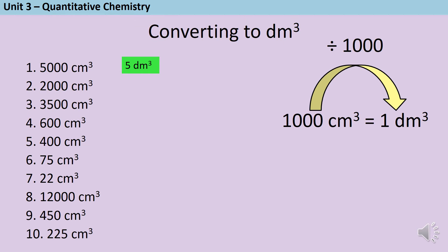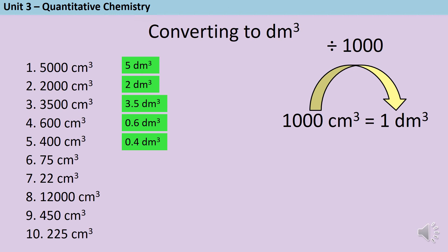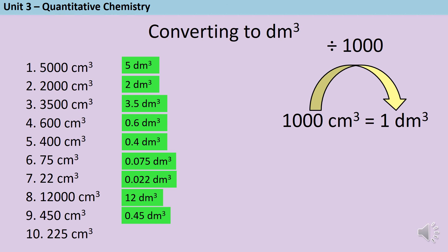So: 2000 cm³ is 2 dm³; 3500 cm³ is 3.5 dm³; 600 cm³ is 0.6 dm³; 400 cm³ is 0.4 dm³; 75 cm³ is 0.075 dm³; 22 cm³ is 0.022 dm³; 12,000 cm³ is 12 dm³; 450 cm³ is 0.45 dm³; and 225 cm³ is 0.225 dm³.